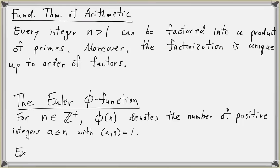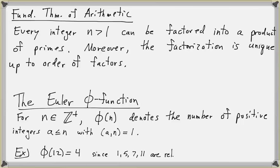As a quick example, phi of 12 represents the number of positive integers between 1 and 12 that are relatively prime to 12. Phi of 12 is actually equal to 4, since the only positive integers relatively prime to 12 are 1, 5, 7, and 11. The rest of the integers between 1 and 12 have a greatest common divisor greater than 1 with 12. Another example: phi of 7 is 6. In fact, phi of any prime number p would be p minus 1, because all numbers between 1 and p minus 1 are relatively prime to p.